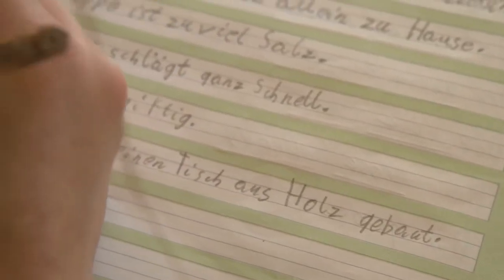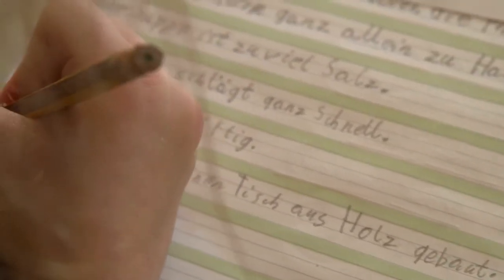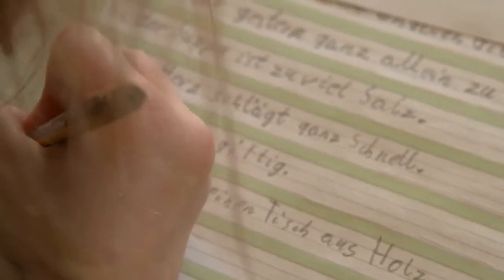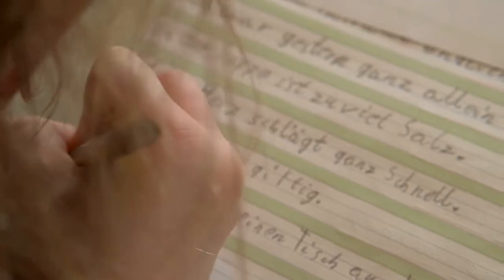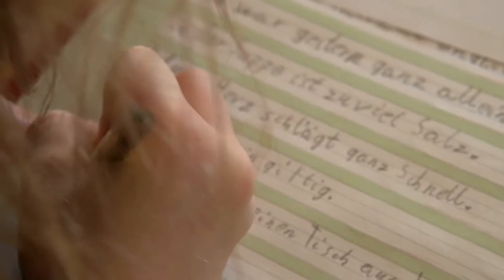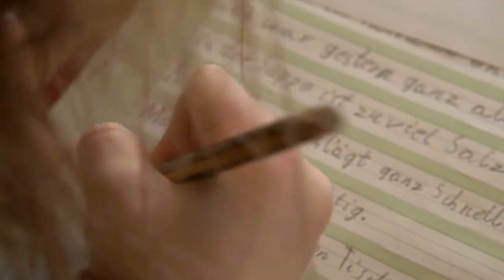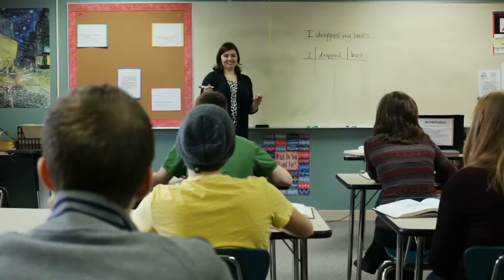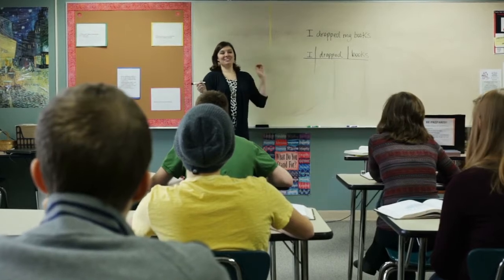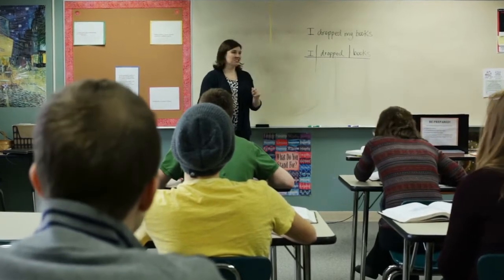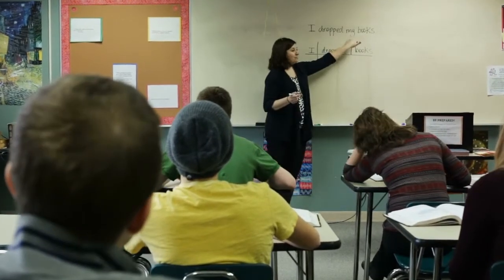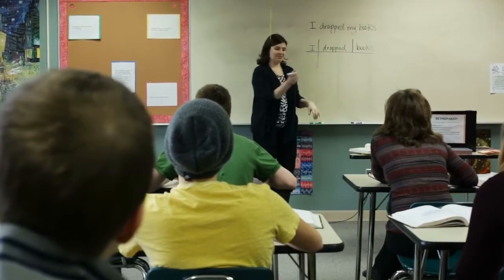Grammar is the system of rules for using words, including semantics — definitions and connotations — and syntax. It is how we combine phonemes and morphemes into words to make meaningful communication. It's all the material you've been learning in English class since you first walked into school.